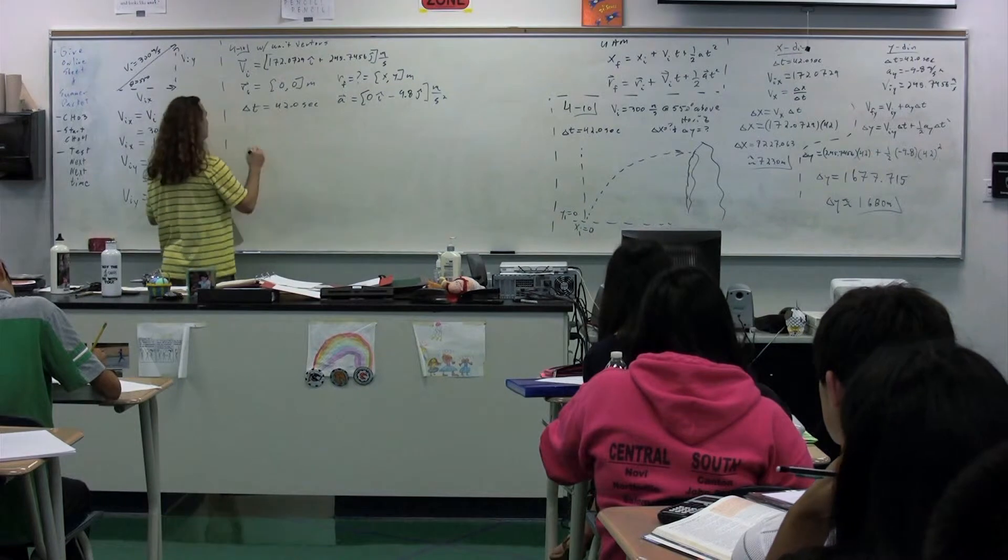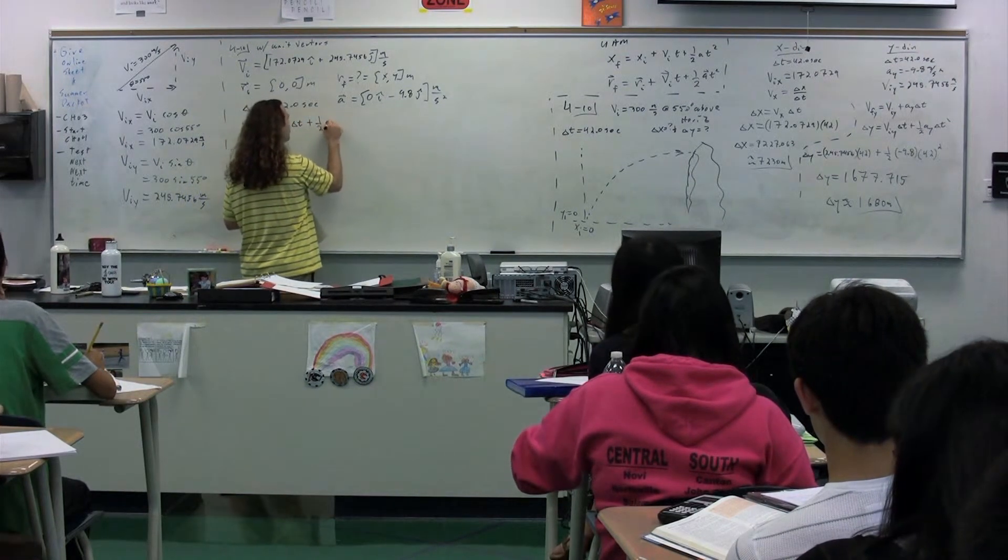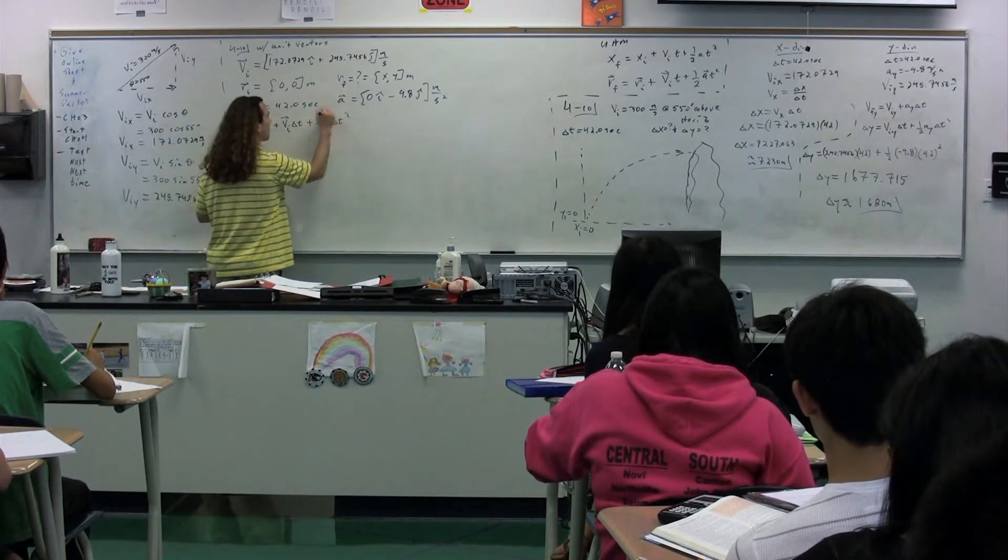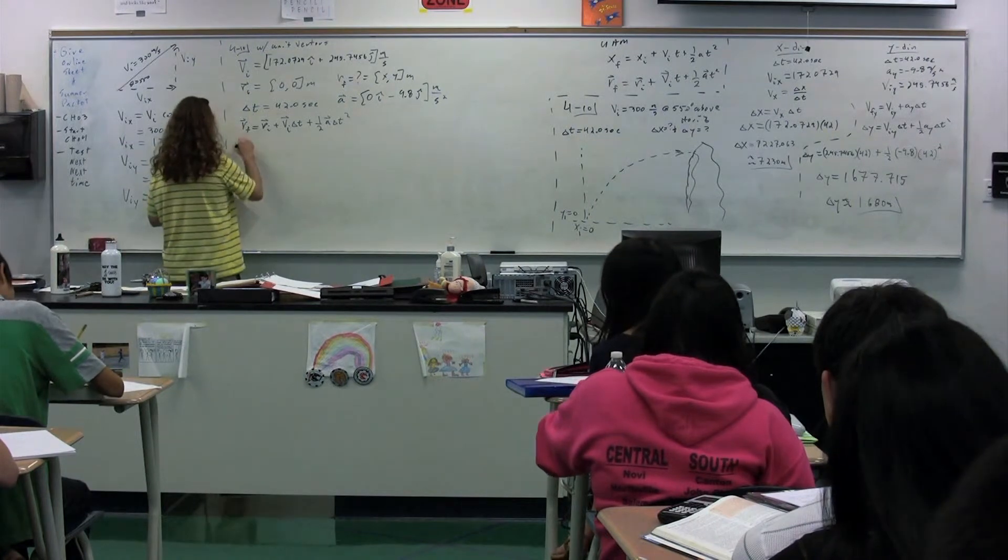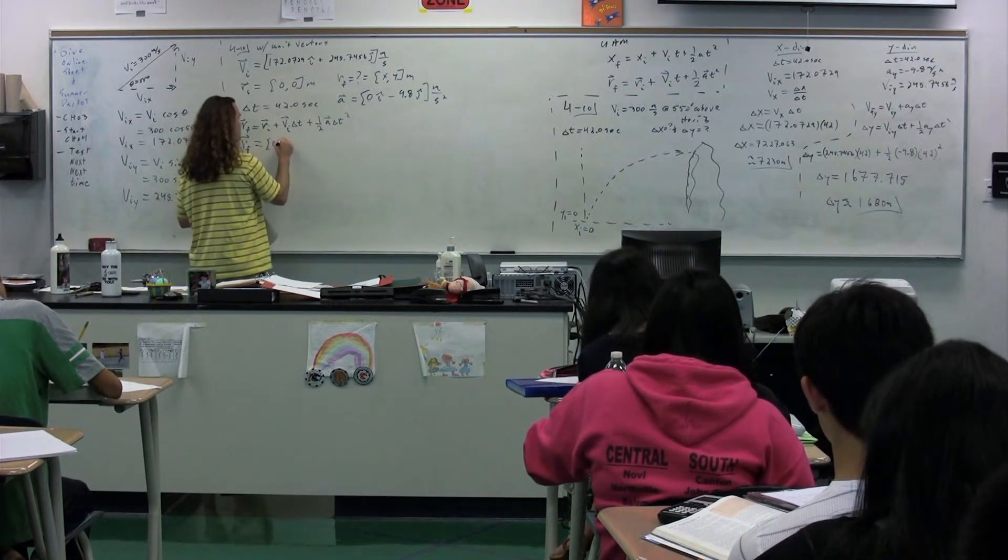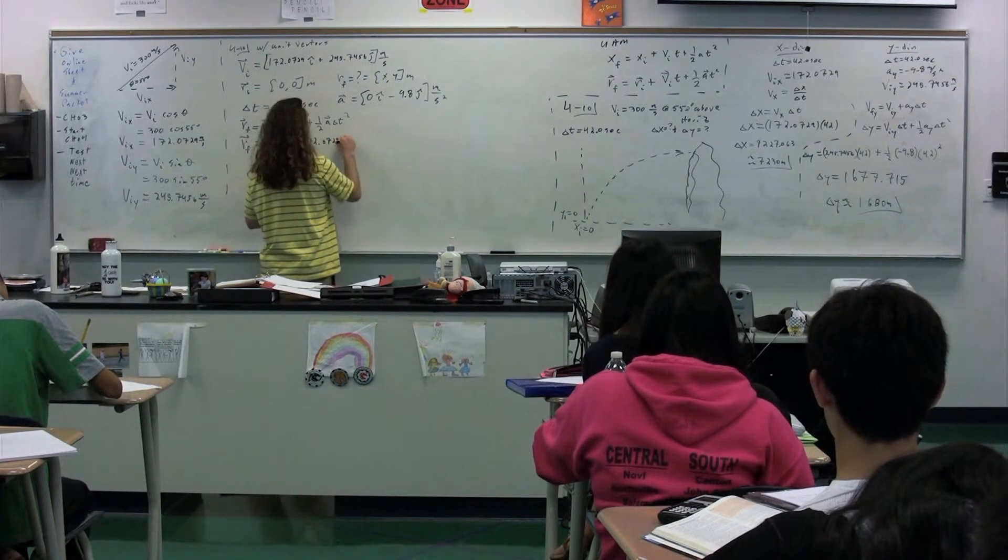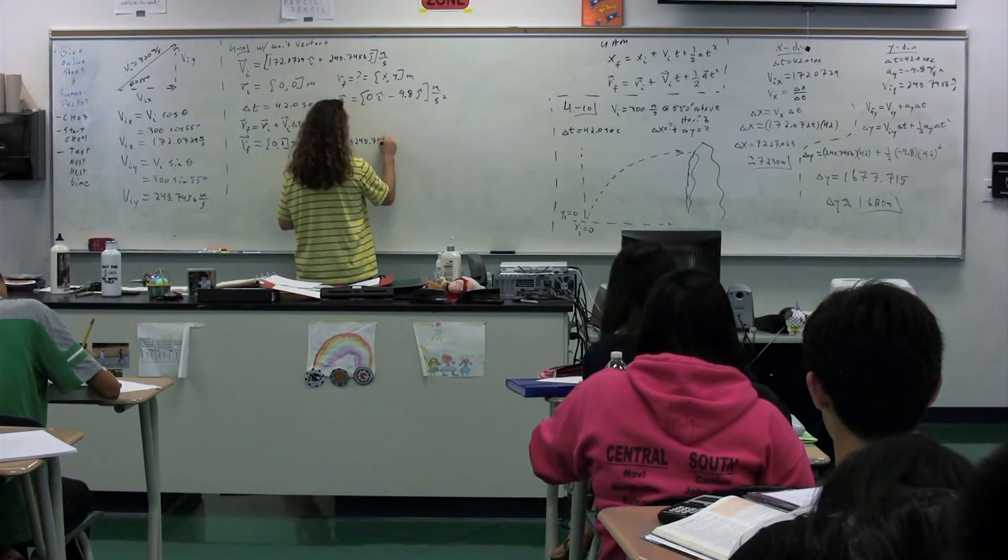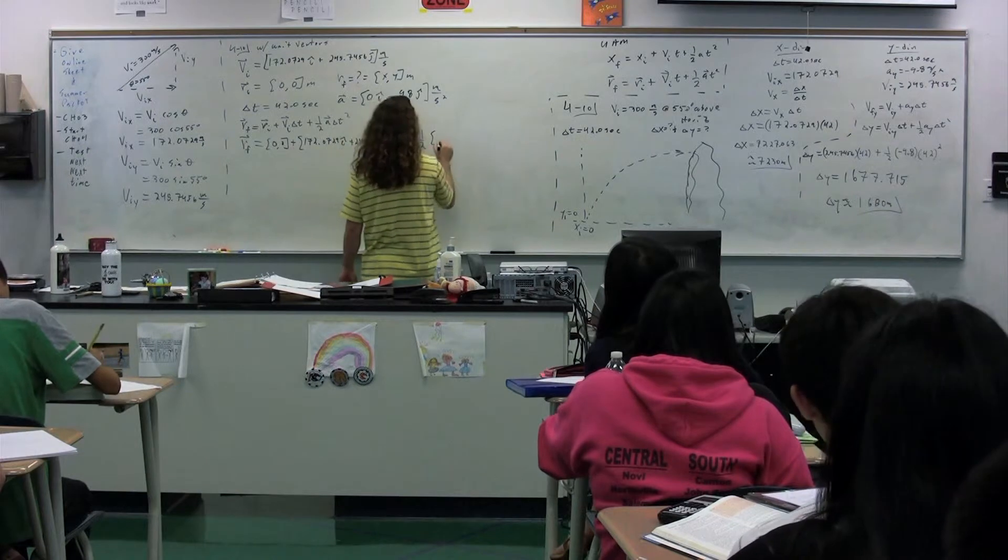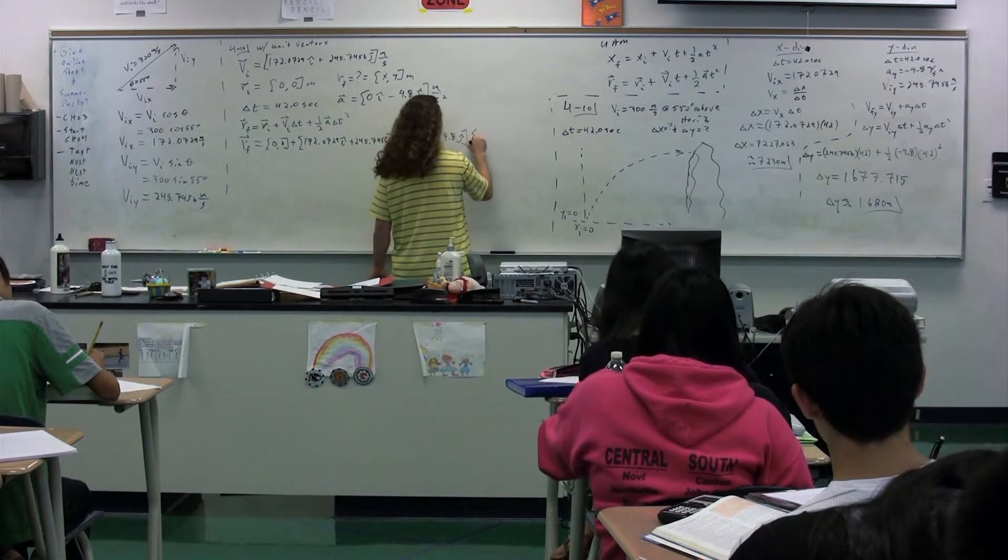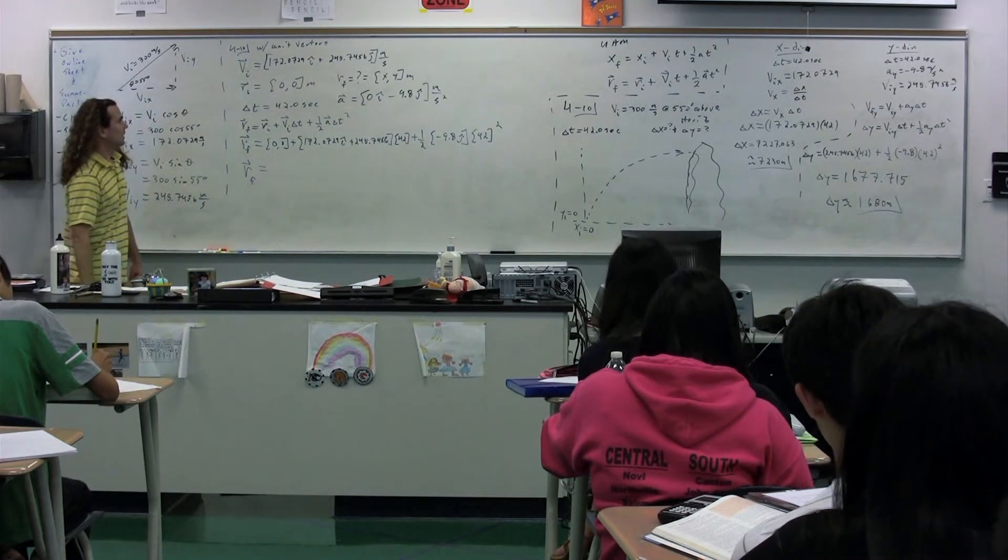So, we have our known variance. So we could write our equation. Position final is equal to position initial plus velocity initial times delta t plus one-half times the acceleration times delta t squared. Those are all vectors. Position final, which is what we're trying to find. Position final is equal to position initial, which is just 0, plus the initial velocity, which is 172.0729i plus 245.7456j times our time, which is 42 seconds, plus one-half times the acceleration, which was negative 9.8j times delta t, which is 42 squared.